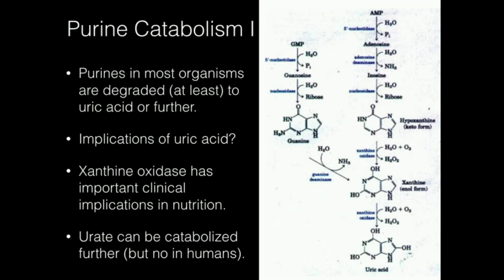Inosine will have its ribose removed by a nucleosidase, and that's going to give this molecule called hypoxanthine — just the nitrogenous base. Hypoxanthine is going to react with an enzyme called xanthine oxidase, which has some implications in nutrition because it's a source of free radicals. The product of xanthine oxidase is hydrogen peroxide, which is a pro-radical — particularly in the presence of metals, it can be turned into radicals. Xanthine oxidase converts hypoxanthine into xanthine.